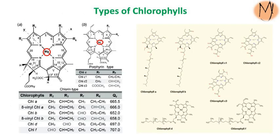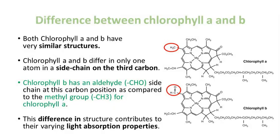In this slide, you can see the structures of several chlorophyll molecules. Both chlorophyll A and B have very similar structures — both are tadpole-shaped due to a hydrophobic tail and hydrophilic head. The head consists of a porphyrin ring with magnesium in the center. Chlorophyll A and B differ in only one atom in a side chain on the third carbon: chlorophyll B has an aldehyde (CHO) side chain at this carbon position, compared to the methyl group (CH3) for chlorophyll A.